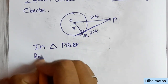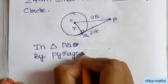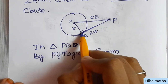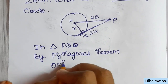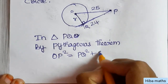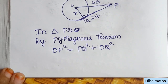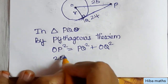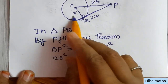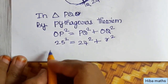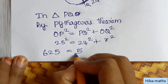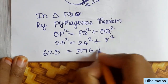By Pythagoras theorem, the hypotenuse OP is opposite the 90-degree angle. So OP squared is equal to PQ squared plus OQ squared. OP squared equals PQ squared plus radius squared. That gives us: 25 squared equals 24 squared plus R squared. 25 into 25 is 625, and 24 into 24 is 576. So 625 equals 576 plus R squared.